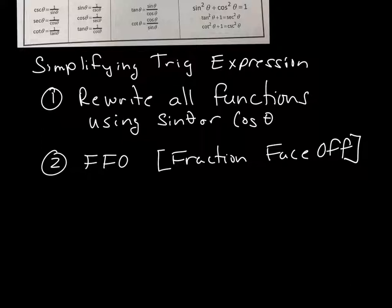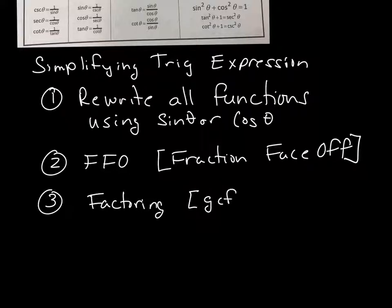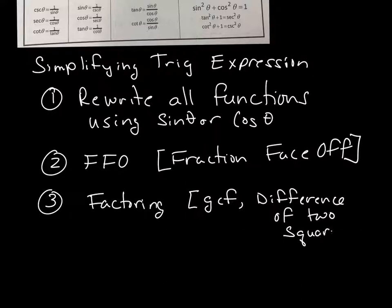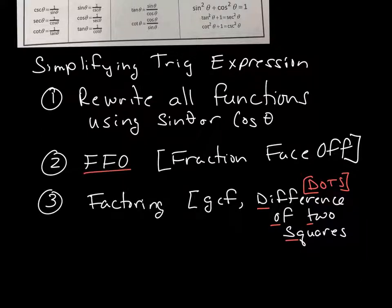The next big idea is factoring. In factoring, we have a couple of different types: it can either be the GCF that you have to take out, or the difference of two squares. In my notes, when referring to the difference of two squares, it's going to be DOS, DOTS, or dots. Whenever you see that, that means the difference of two squares. Fraction face-off means that you have to manipulate the fractions in some way.